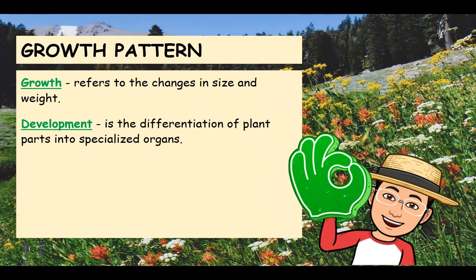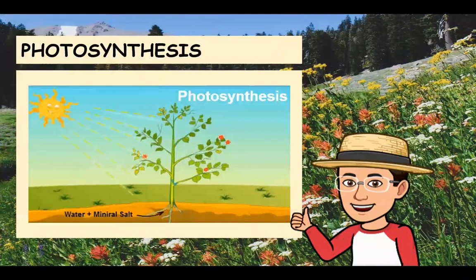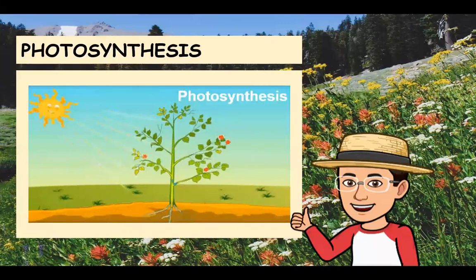The yield of farm crops depends on the size and efficiency of the plant's photosynthetic system. Photosynthesis is the process by which green plants manufacture food from raw materials of the soil and air using solar energy. The plant traps and stores the energy of the sun and uses it to manufacture carbohydrates from carbon dioxide and water. Carbohydrates are used by the plant to maintain its life processes, including absorbing water and nutrients, transporting them, and converting the products of photosynthesis to cell parts. Photosynthesis starts as soon as the plant grows leaves.